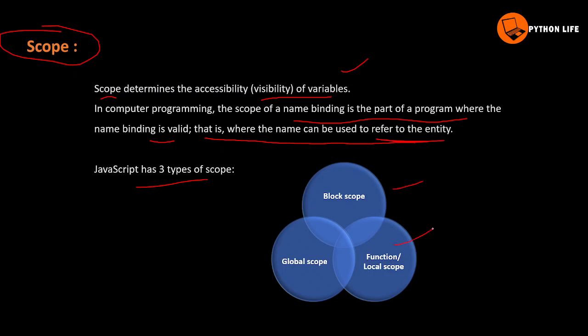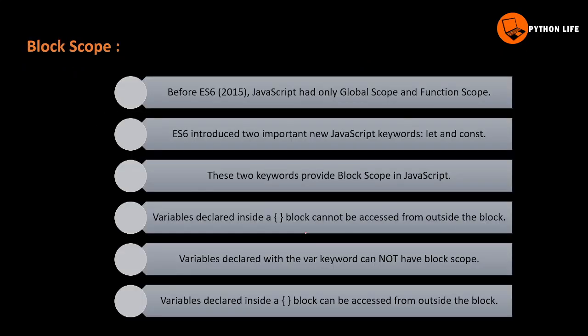We have three types of scope: block scope, functional or local scope, and global scope. Before ES6 — the 2015 software version — there was only global scope and function scope. Block scope was not available until 2015, when block scope was introduced.